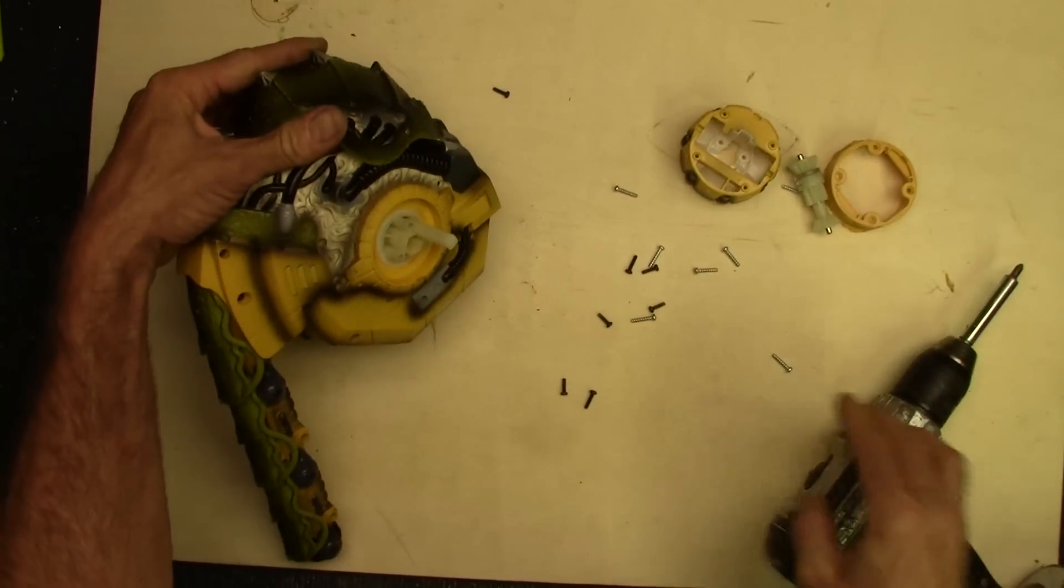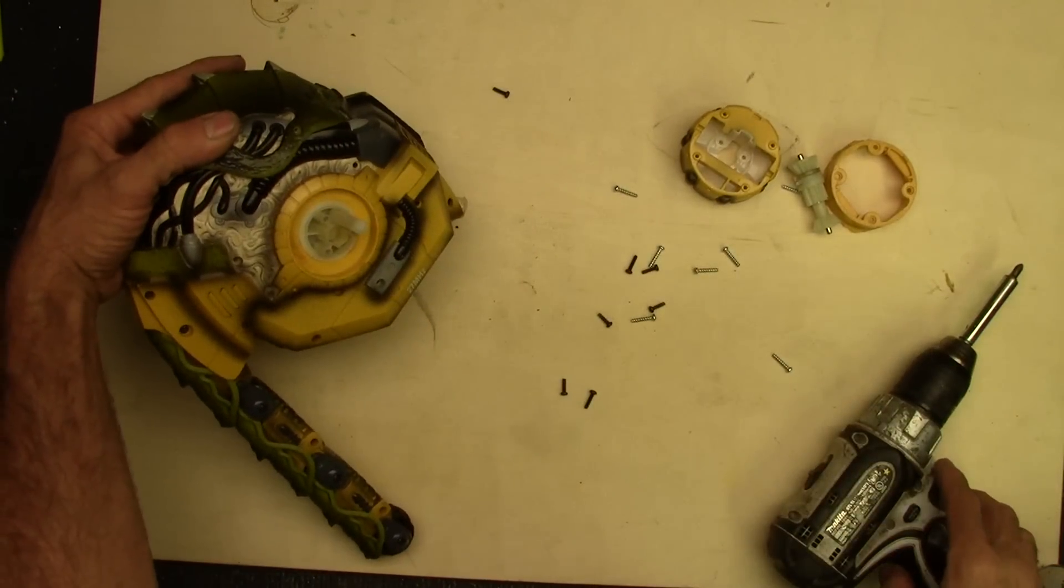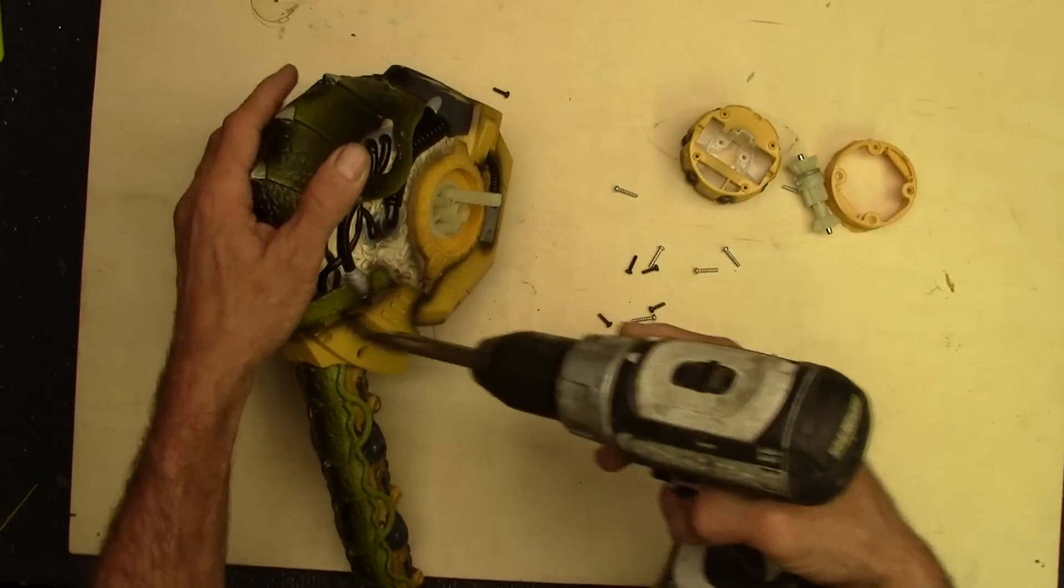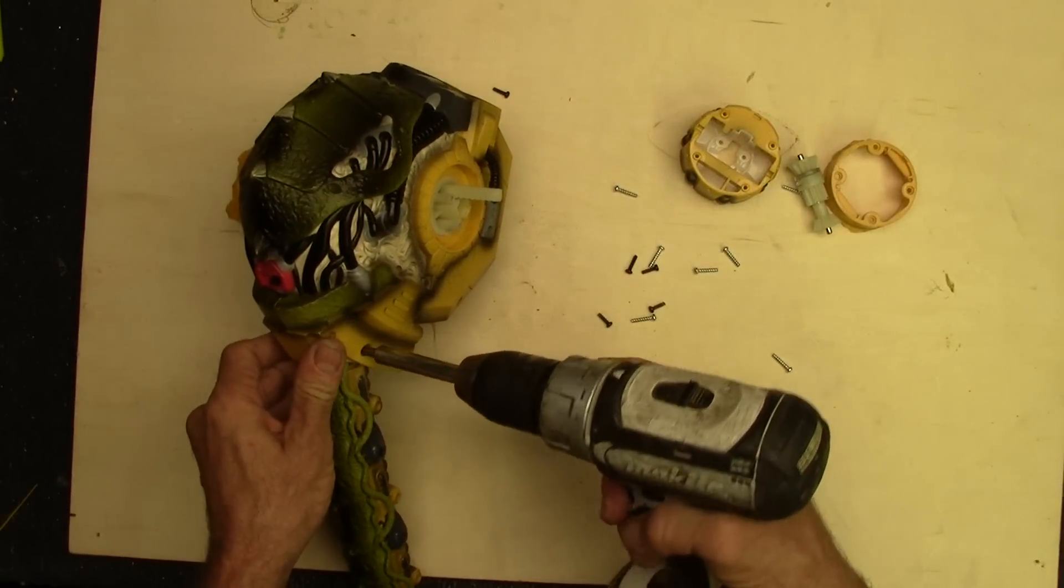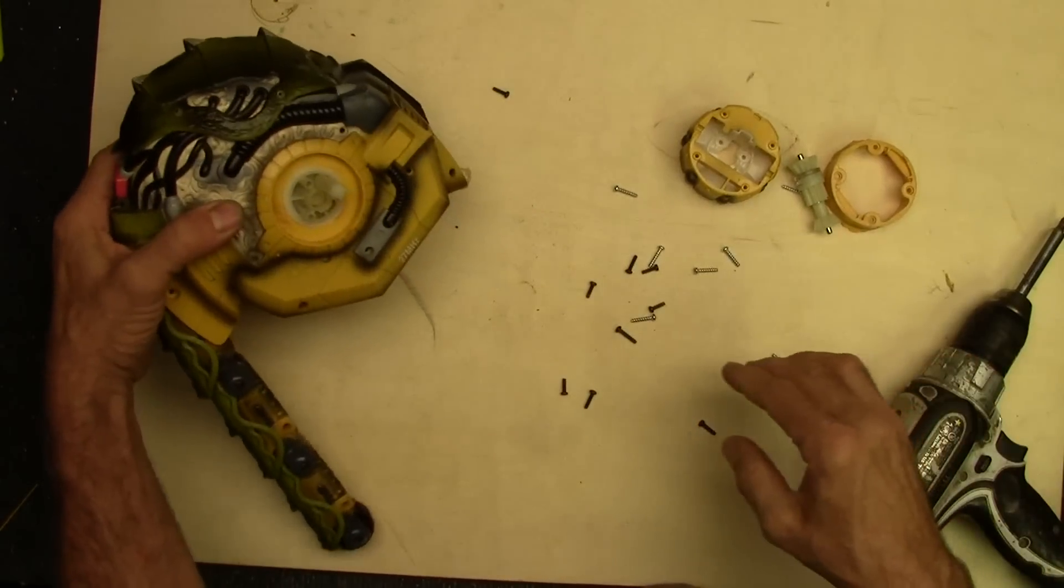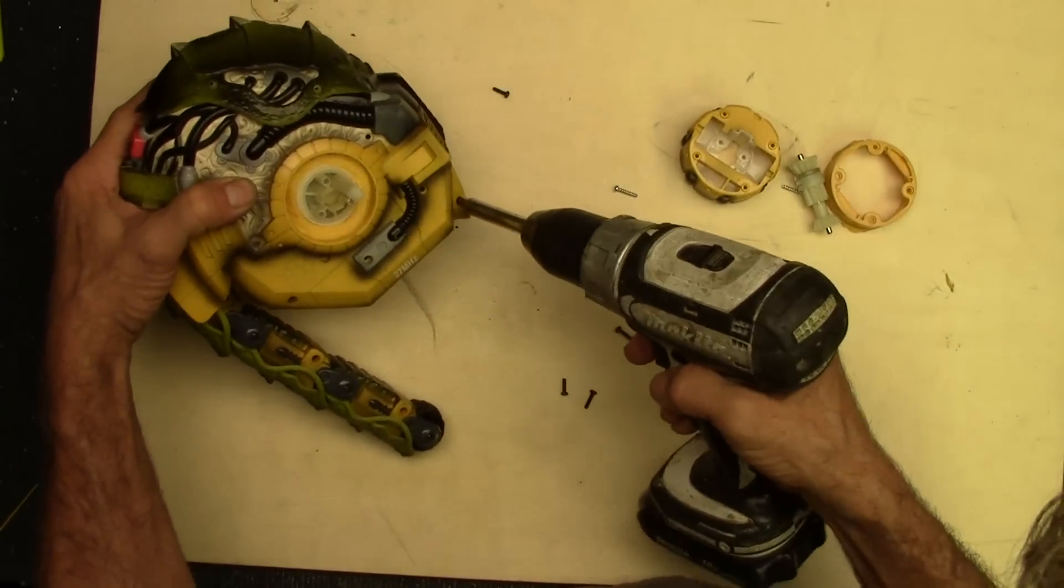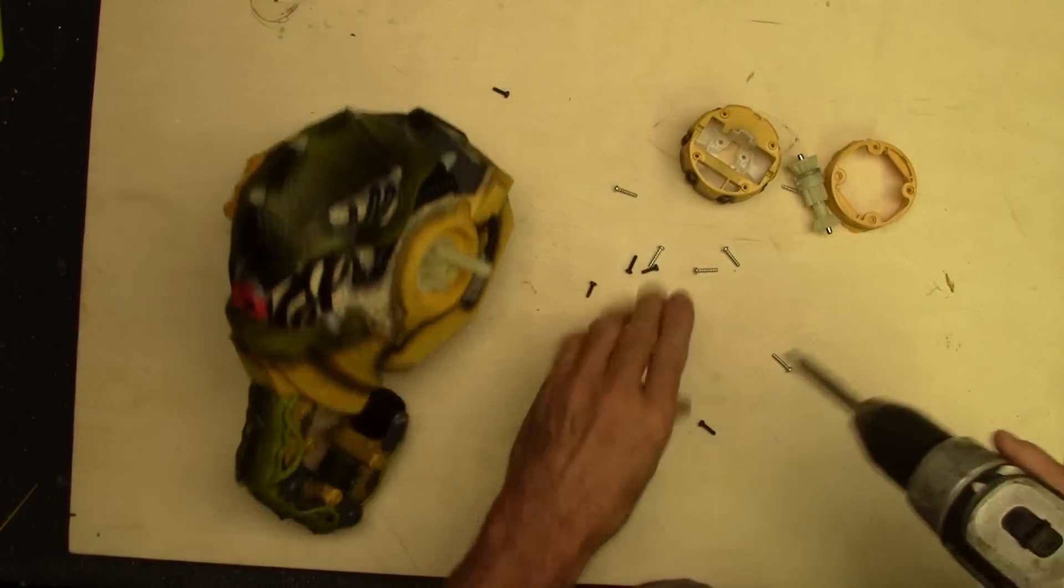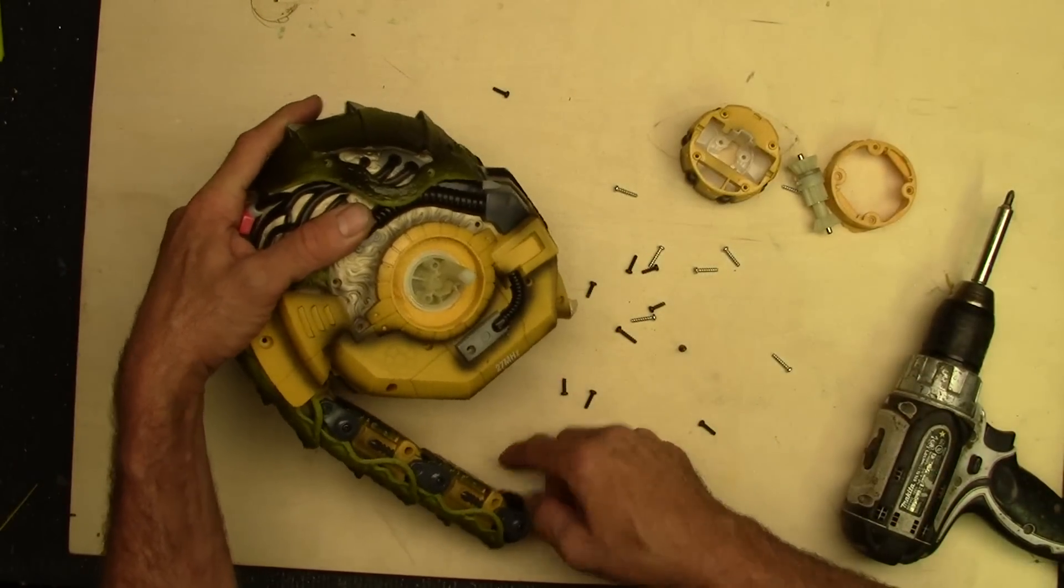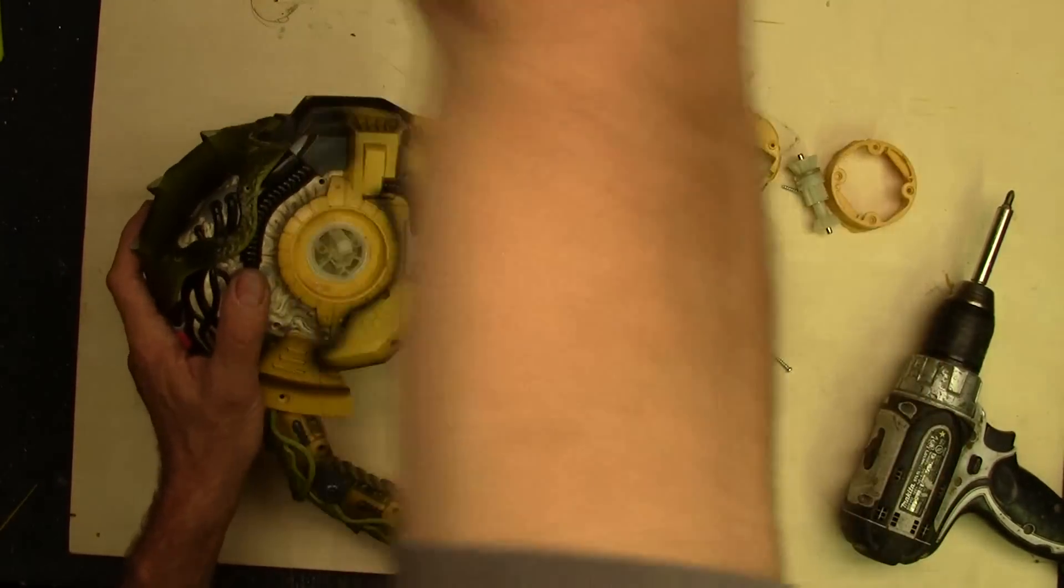So if anybody has any idea what this thing was, leave it in the comments, because I'm curious. I don't know what this thing did, but it sure is interesting looking. I think it was remote control because right here it says 27 megahertz. So it probably had a remote that went with it.